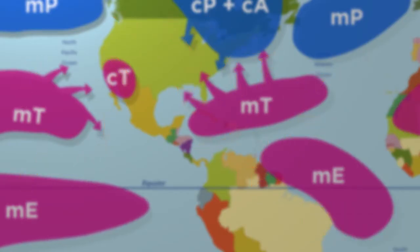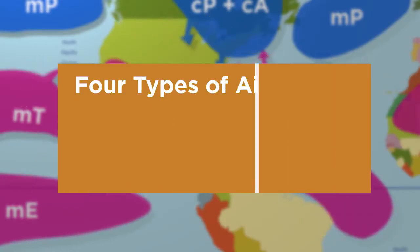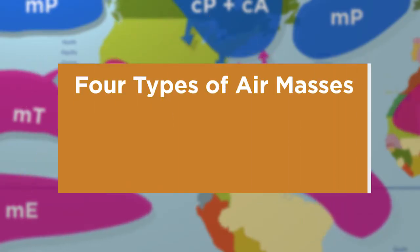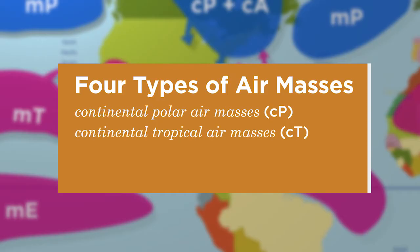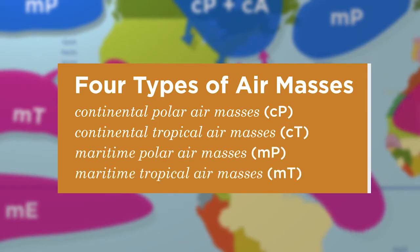There are four types of air masses, which are categorized by their moisture levels and temperatures: continental polar air masses, continental tropical air masses, maritime polar air masses, and maritime tropical air masses.